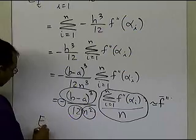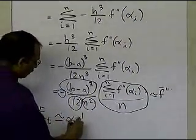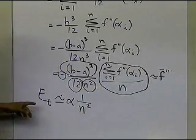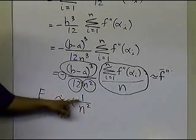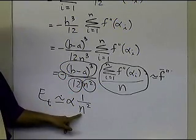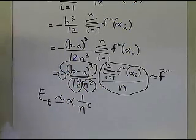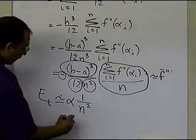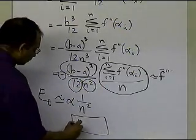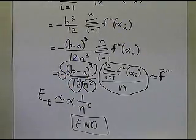So what this tells us is that the true error is approximately proportional to 1 by n squared. This means that if you double the number of segments in your multiple segment trapezoidal rule, your true error is going to get quartered, and so on and so forth. That's how the true error works in the multiple segment trapezoidal rule. And that's the end of this segment. Thank you.